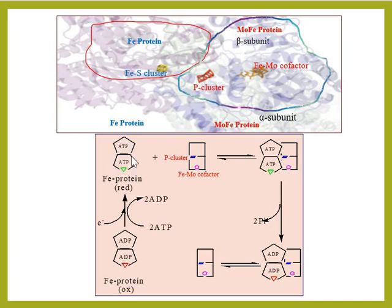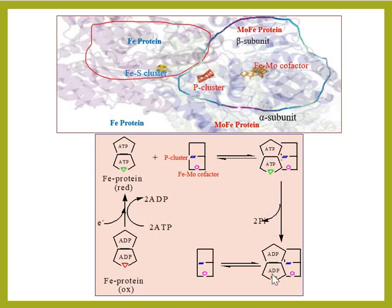When the Fe protein becomes reduced, it undergoes conformational changes, and due to these changes it comes near to the P cluster of the MoFe protein. This allows it to transfer its electrons to the P cluster. The reduced Fe protein binds to the MoFe protein and transfers its electrons. During this transfer, ATP converts into ADP, and the Fe protein is again oxidized — green converts to red.